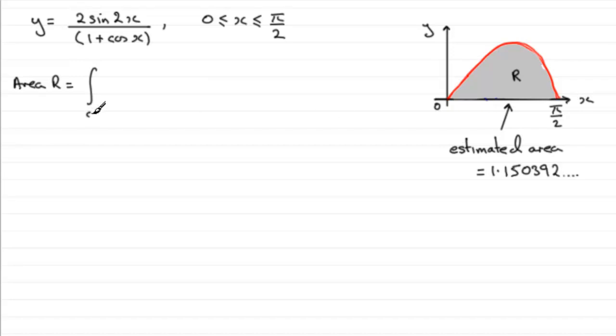So in other words we need to integrate from 0 to π/2 our equation up here: 2sin2x all over (1 + cosx), and we integrate that with respect to x.